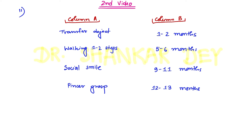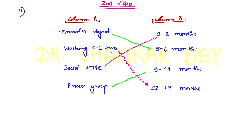Question number 11 was about developmental milestones. In column A, there is a series of events and in column B, there is a timeline, and you have to match column A with column B. Transfer object occurs during 5 to 6 months. Walking 1 to 2 steps is at around 1 year of age, like 12 to 13 months. Social smile at 2 months. Pincer grasp is at 9 to 11 months — immature pincer grasp at 9 months and mature at 12 months.